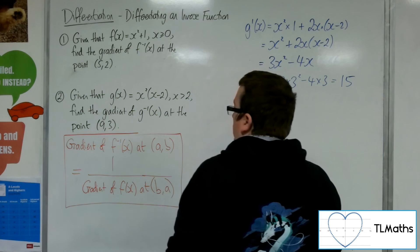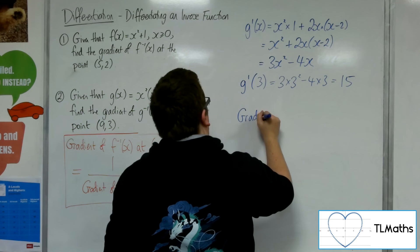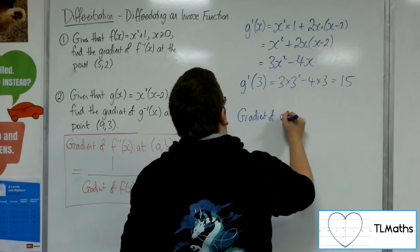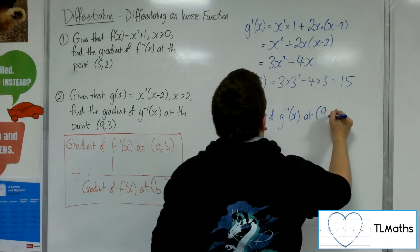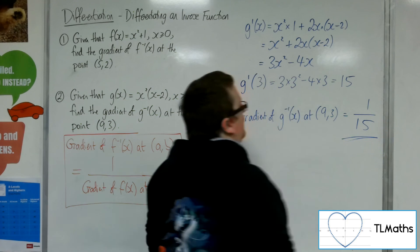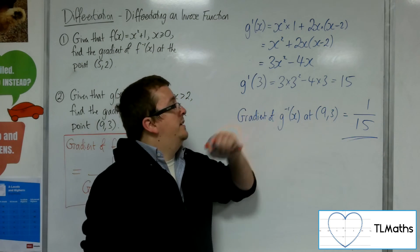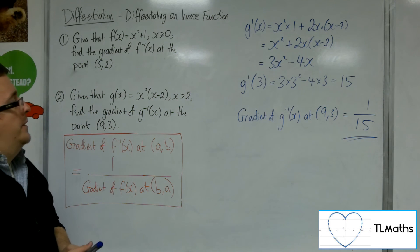This means that the gradient of the inverse function of g at (9, 3) will be equal to 1 over 15. 1 over the gradient of g at (3, 9).